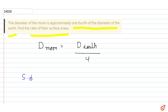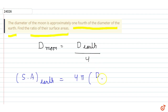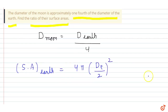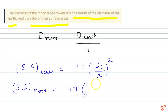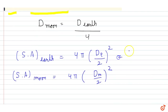Surface area of earth is equal to 4πr², where r is the radius. We can represent the diameter of earth as d_e, so surface area of earth equals π·d_e². Similarly, surface area of moon equals 4π times (d_m/2)², which simplifies to π·d_m².